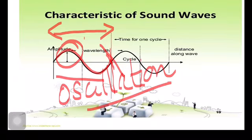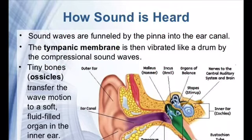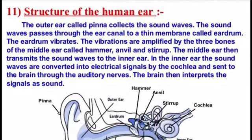Here we have completed the characteristics of sound waves. Dear students, let us now discuss how we hear. We know that sounds are produced as waves in air or any other medium. As these sound waves travel to our ears, they are converted into electric signals or messages that our brain can understand. Our ears have a special structure that allows these functions.